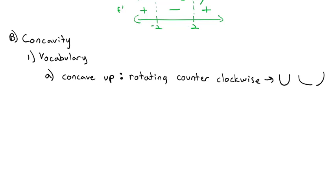Let's do the concavity test on our same example: f(x) = x³ − 12x. The first derivative was 3x² − 12, and the second derivative is 6x. We divide the number line into subregions based on when the second derivative equals 0. Dividing both sides by 6, x = 0 is our inflection point.